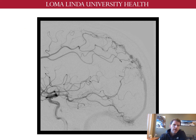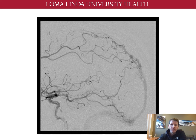A cranial dural arteriovenous fistula is an abnormal connection between arteries and veins in the brain. One key difference between AV fistulas and AV malformations is that AVFs are typically acquired lesions that form sometime later in life, while AVMs are congenital lesions usually present since birth. Another difference is that while AVMs have a nidus with multiple abnormal connections between arteries and veins, AV fistulas may only have a single abnormal arteriovenous connection, which we call the fistula site or fistula sac.